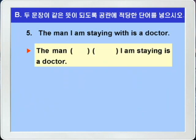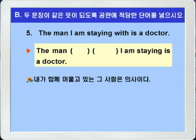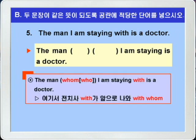5번입니다. 'The man I am staying with is a doctor.' / 'The man blank blank I am staying is a doctor.' 내가 함께 머물고 있는 그 사람은 의사이다. 아래 문제를 보니까 The man과 I 사이에 전치사 with의 목적에 해당되는 목적격 관계대명사 whom 또는 who가 생략되어 있죠. 'The man whom/who I am staying with is a doctor.' 여기서 전치사 with가 앞으로 나가면 'The man with whom'이 되겠죠. 그러나 'with who'는 절대 안됩니다. 'The man with whom I am staying is a doctor.' 따라서 블랭크에는 각각 with와 whom이 들어가면 되겠습니다.